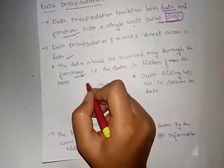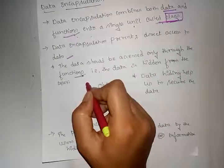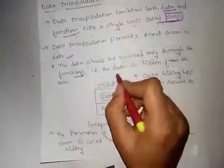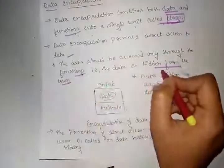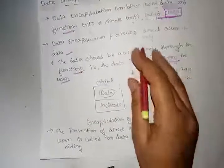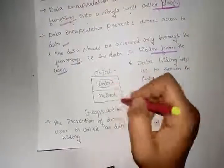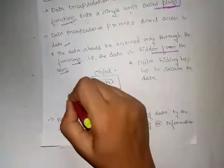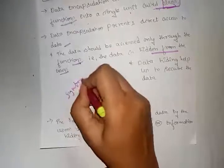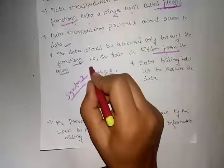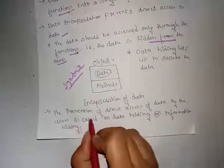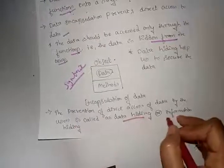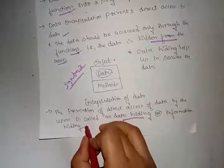Using functions, data is accessed — that is, data is hidden from the users. The prevention of direct access of data by the user is called data hiding or information hiding. The syntax for data encapsulation shows data members and methods combined inside a class.